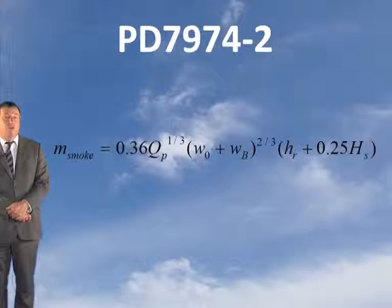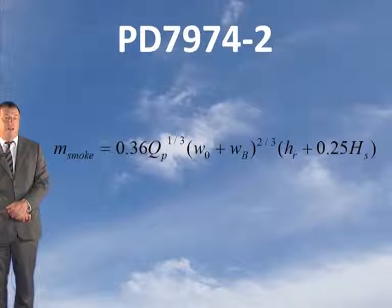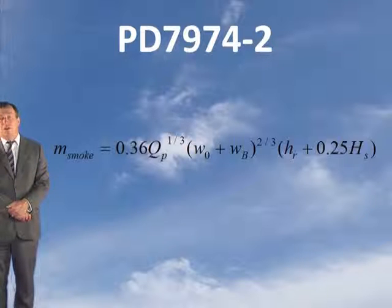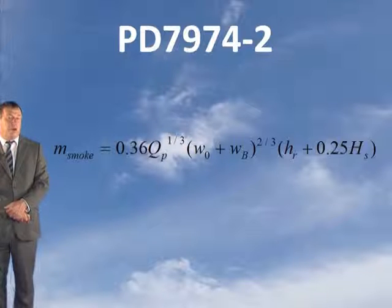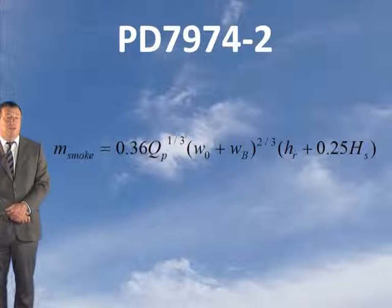This gives rise to the equation which is used where there are no channeling screens. In the equation, L has simply been replaced with W0 plus WB — that is the width of the opening plus the width of the balcony, or the distance from the opening to the spill edge.